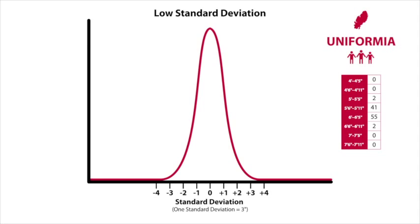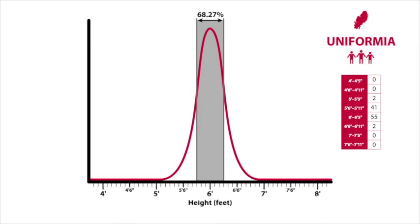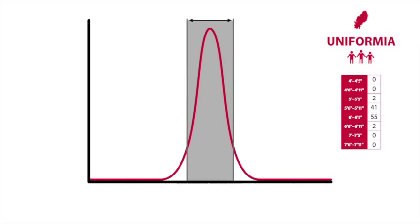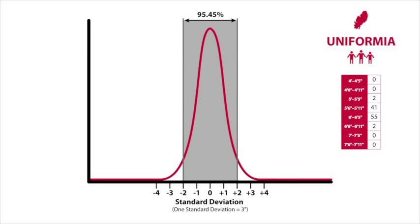It is worth noting that, in this example, one standard deviation is calculated to be plus or minus 3 inches. So, 68% of the data falls within plus or minus one standard deviation, in other words, between 5 foot 9 inches and 6 foot 3 inches.